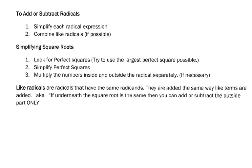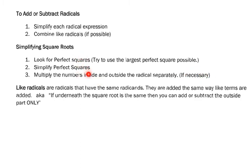When adding and subtracting radicals, your first step is to simplify each radical expression, and then the second step is to combine like radicals if possible — very similar to combining like terms. To simplify a square root, first look for any perfect squares and use the largest perfect square possible. Then simplify using those perfect square numbers, and multiply any numbers on the outside or inside as needed.